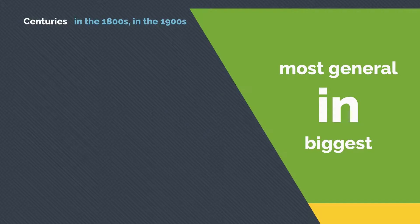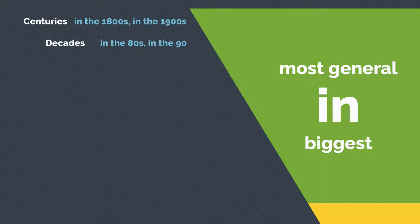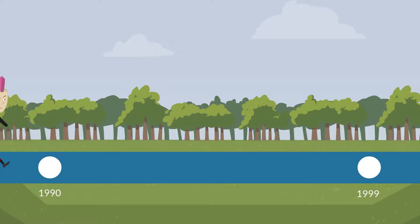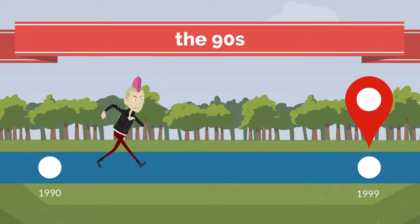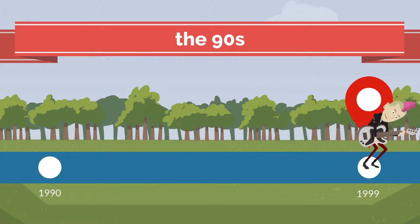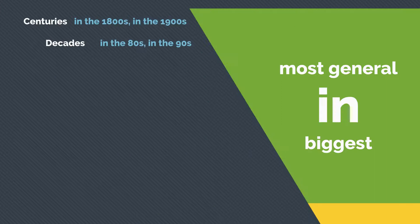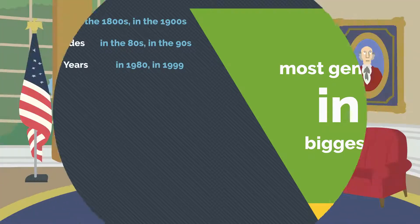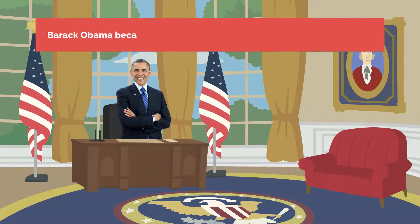In can be used with decades, such as in the 80s, in the 90s, etc. For example, Nirvana was a popular rock band in the 90s. Again, this is not very specific — it can mean any time between 1990 and 1999. It can also be used with years, such as in 1980, in 1999, etc. For example, Barack Obama became president of the United States of America in 2009.